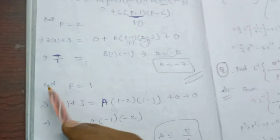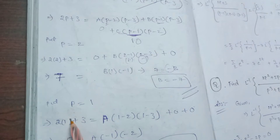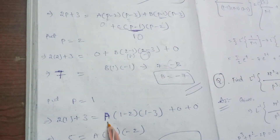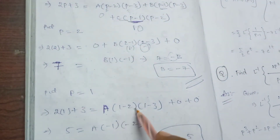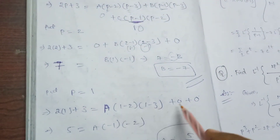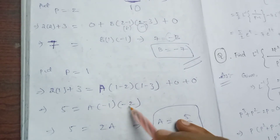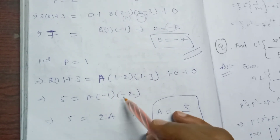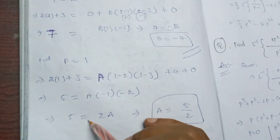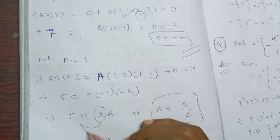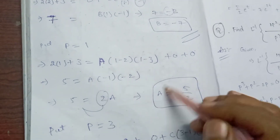Put p equal to 1. Then 2 times 1 plus 3 is equal to A times (1 minus 2)(1 minus 3). That gives A times minus 1 times minus 2, which equals 2A. So 5 equals 2A, therefore A equals 5/2.